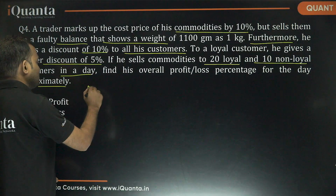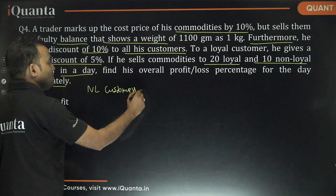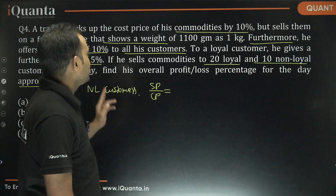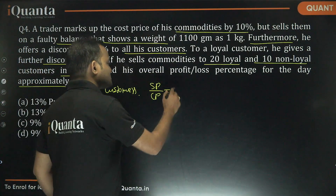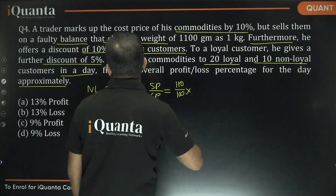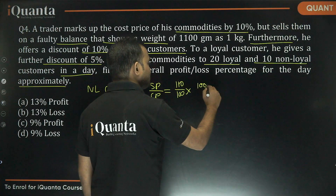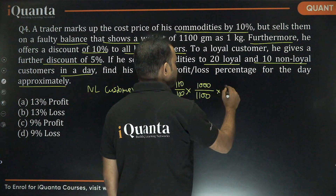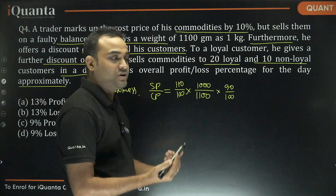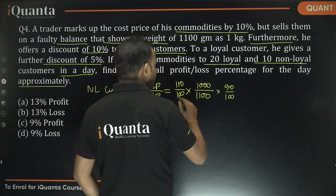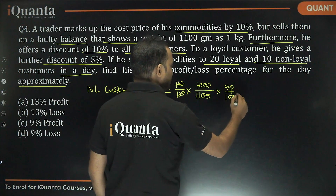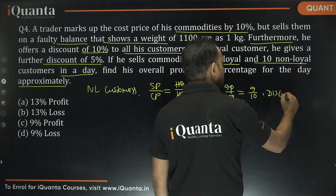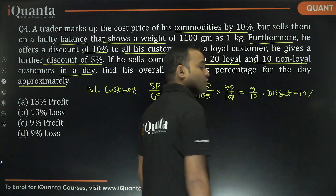For non-loyal customers, the selling price to cost price ratio: he marks up by 10% giving 110/100, but gives 1100 grams instead of 1000 grams (ratio 1000/1100), and gives a 10% discount (90/100). The 110 and 100 in markup and discount cancel with the faulty balance factor, leaving 9/10 — meaning an ultimate loss of 10% for non-loyal customers.